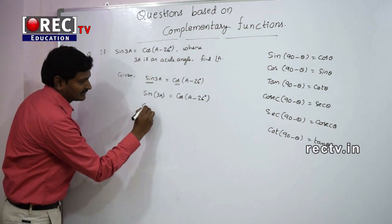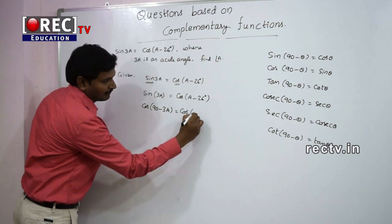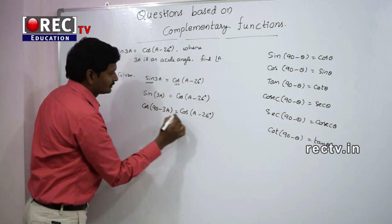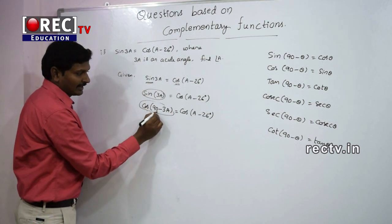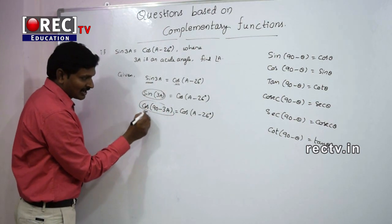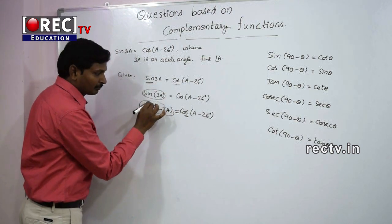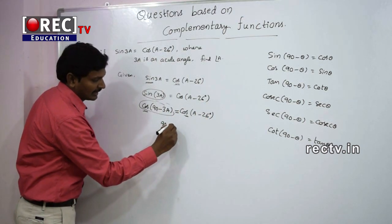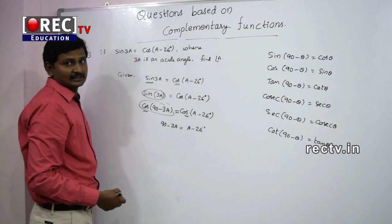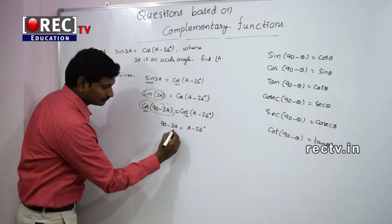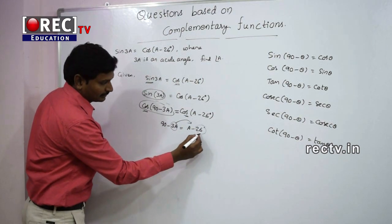Sin(3A) can be written as cos(90° - 3A), which equals cos(A - 26°). We are using complementary functions here. Now both sides are in cos, so with the equal sign in between, we can equate both angles: 90° - 3A = A - 26°.